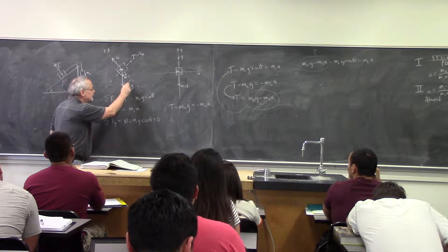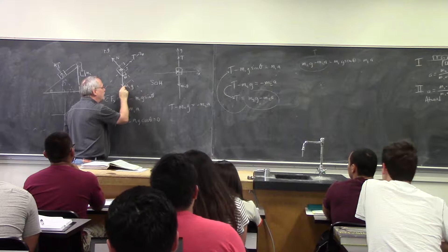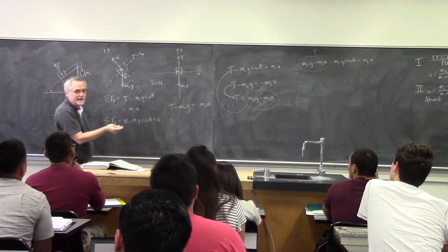This is my opposite side. My m₁g is my hypotenuse. I want the opposite. The only way I can get it is with sine. Cosine would give me adjacent. Tangent would give me something I don't want at all.